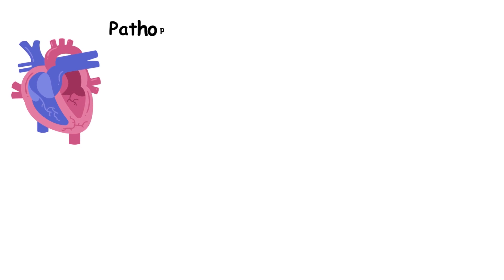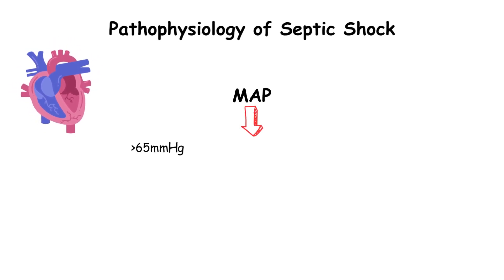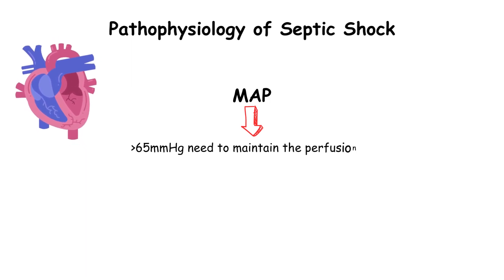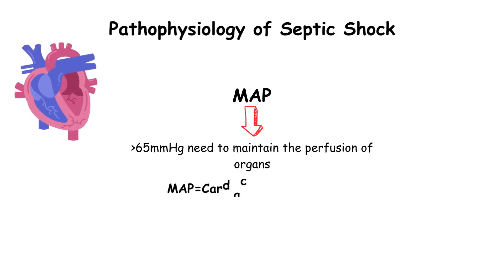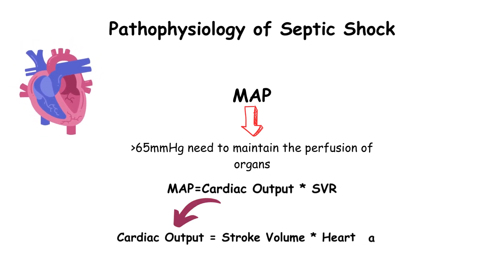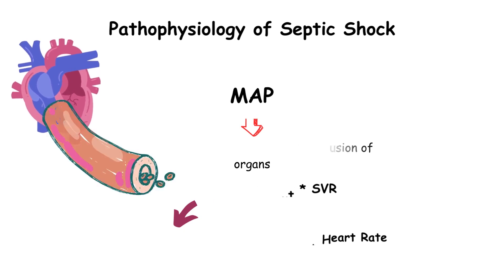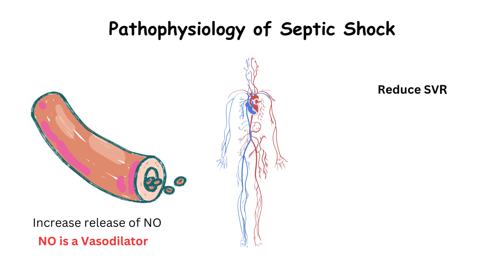Let's talk about the pathophysiology of septic shock. Mean arterial pressure is responsible for the perfusion of major organs, maintained by cardiac output and systemic vascular resistance. Preload volume and heart rate are responsible for cardiac output. During septic shock, there is an increased release of nitric oxide in blood vessels, which causes reduced systemic vascular resistance.